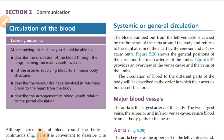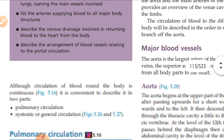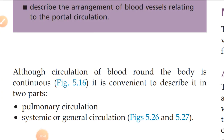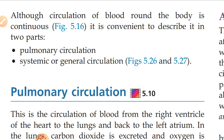Hello students. Our next topic under the cardiovascular system is the circulation of blood. We will cover two main types of circulation. The first one is the pulmonary circulation and the second one is the systemic or general circulation. The circulation of blood around the body is a continuous process which never stops, and for convenience it is described in two parts.